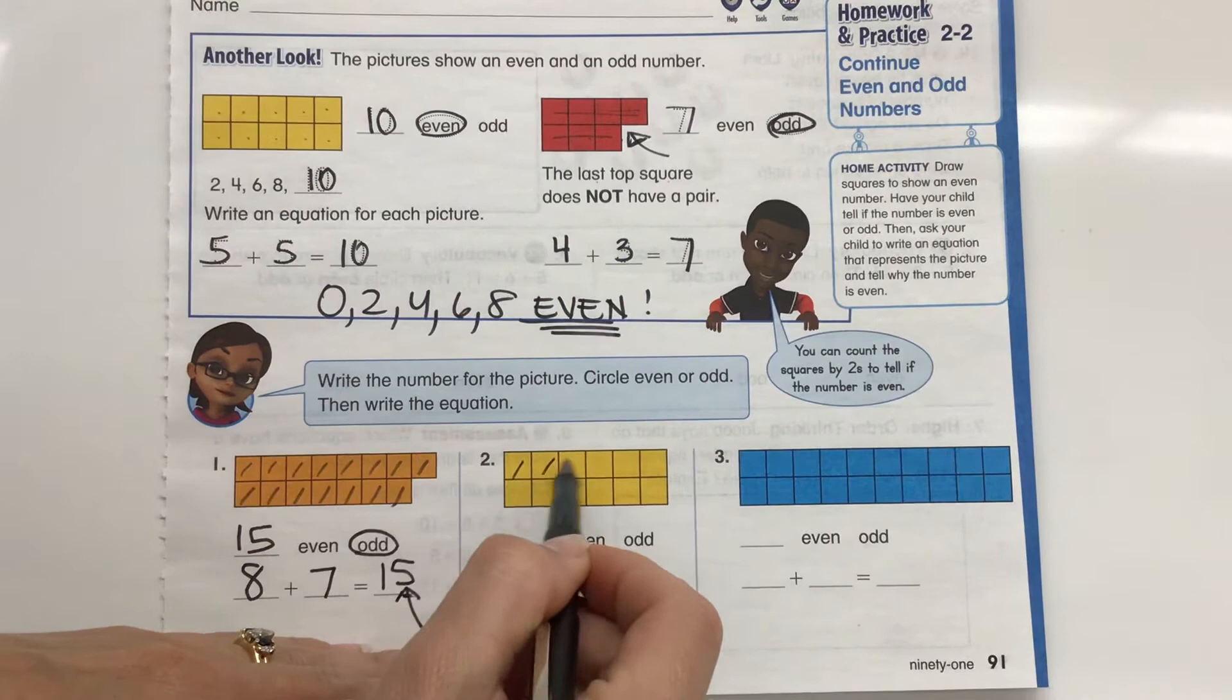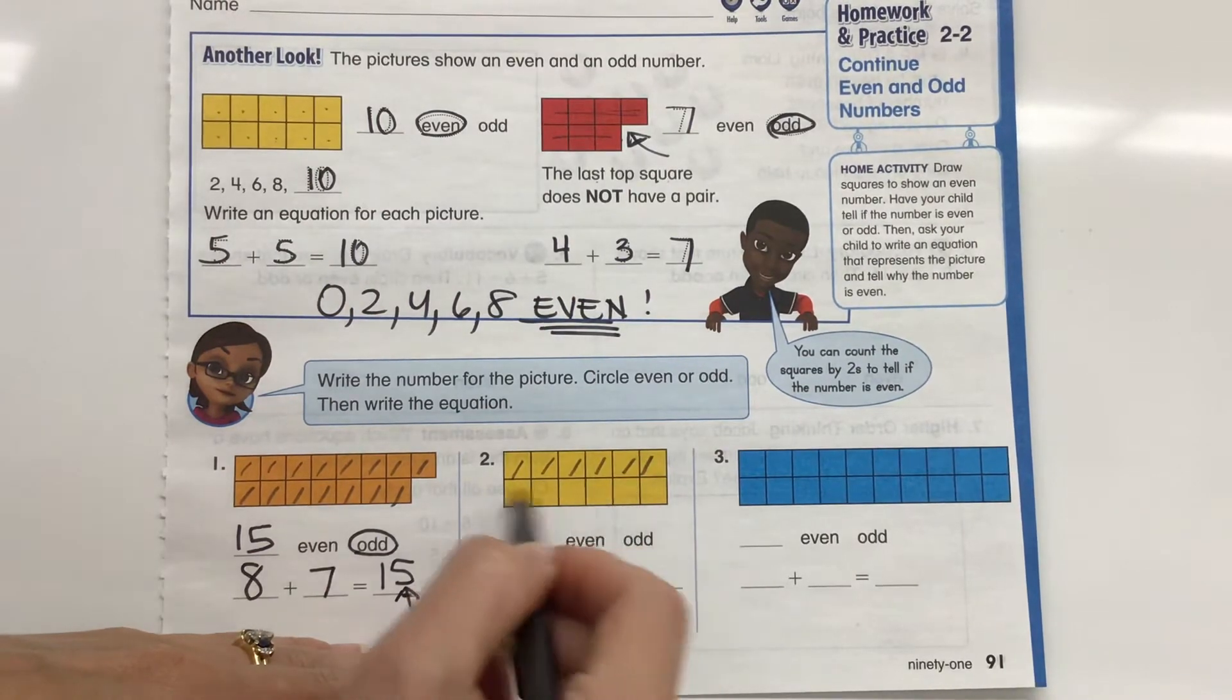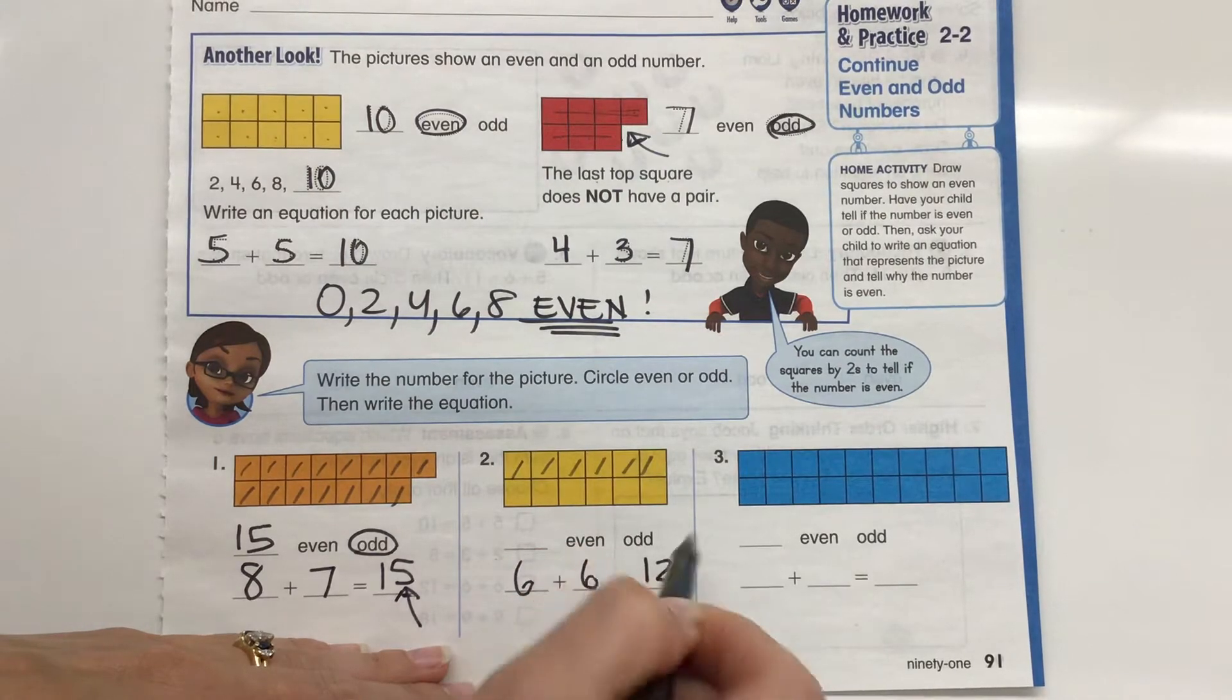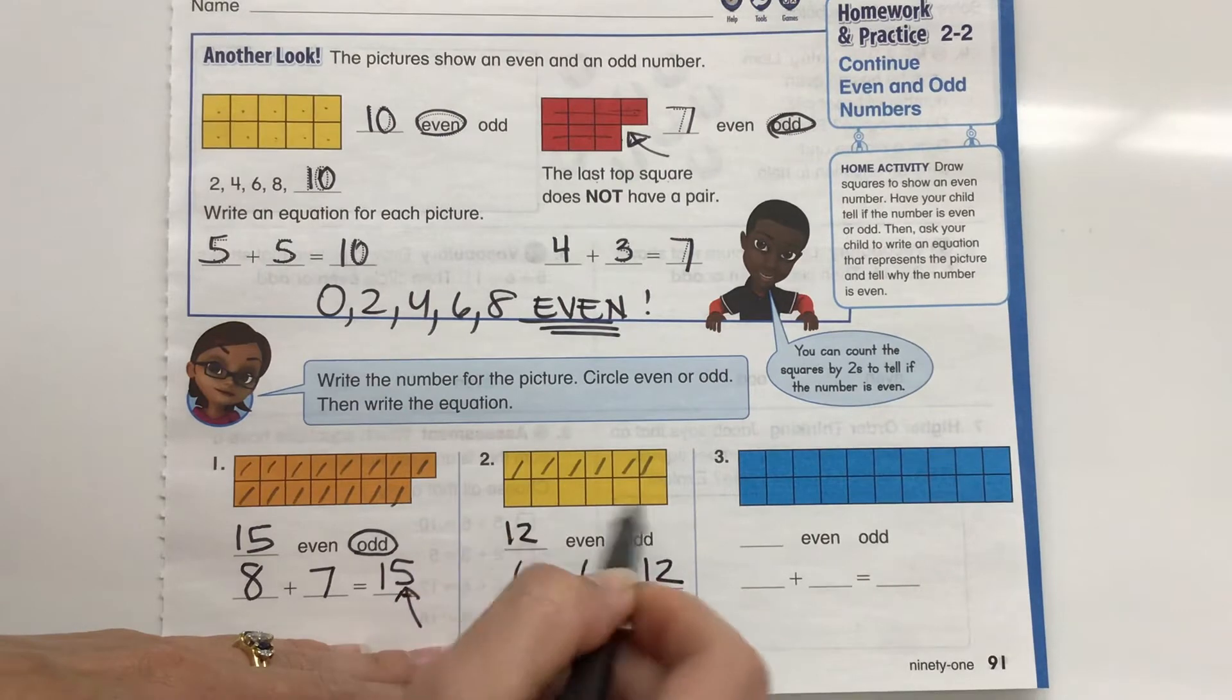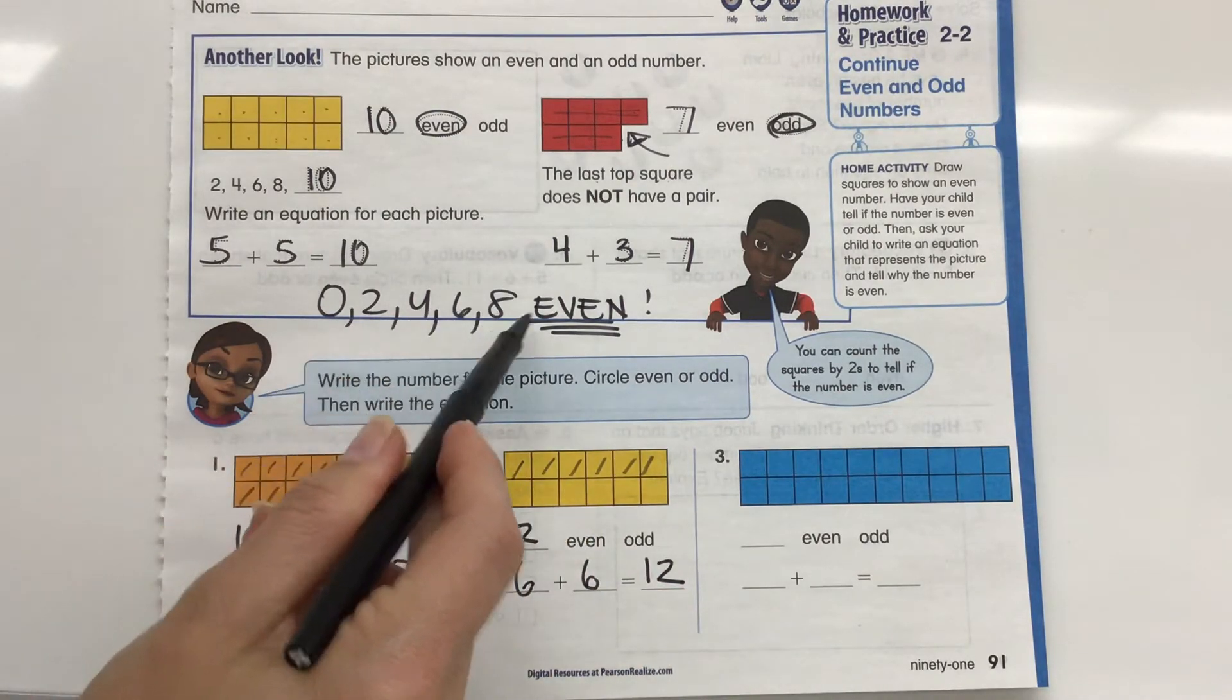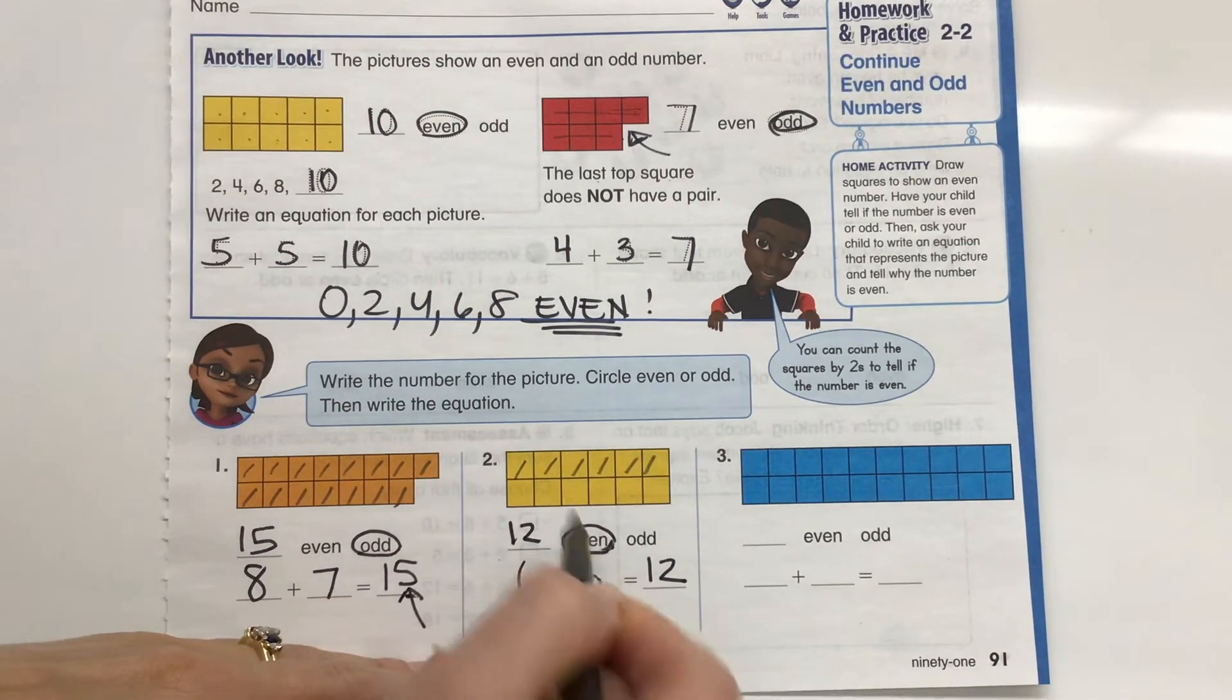Okay. Let's take a look at this one. 1, 2, 3, 4, 5, 6. So 6. And I don't even have to count the bottom because I know it's the same. 6 plus 6 is a sum of 12. So our sum is 12. And 12 is, oh, it's a 2. 0, 2, 4, 6, 8. Who do we appreciate? Even numbers. So we have even.